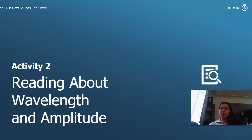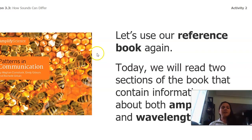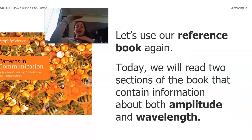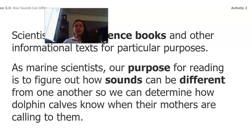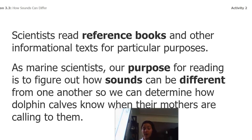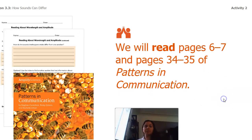Now we're actually gonna go back into a reading from a book that we've done before — we're gonna use our reference book again. We're gonna read two sections that contain information about both amplitude and volume, and wavelength and pitch. Remember that scientists read reference books for particular purposes. Our purpose, as marine scientists, is to figure out how sounds can be different from one another so we can determine how dolphin calves know when their mothers are calling to them. We're gonna read pages 6 through 7 and pages 34 through 35 in Patterns in Communication.